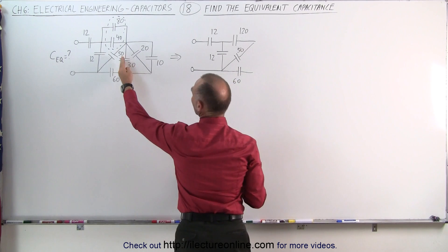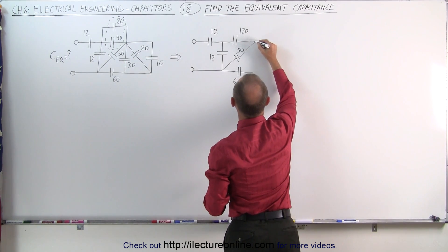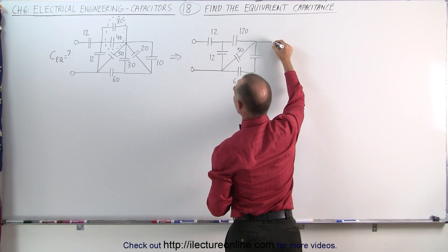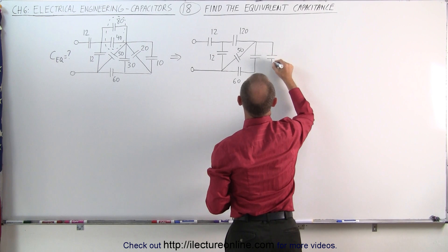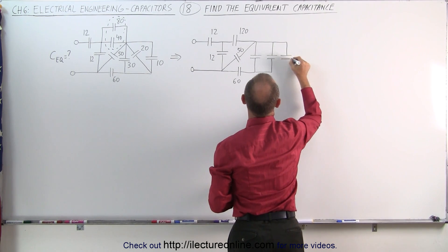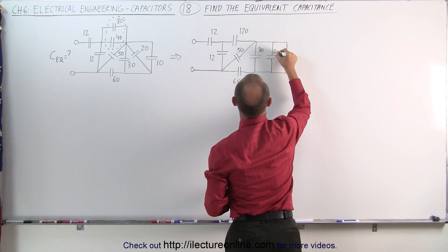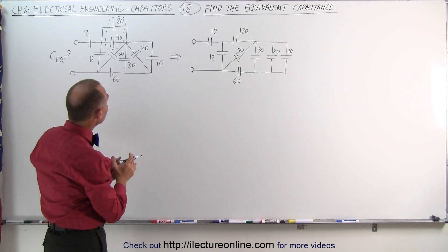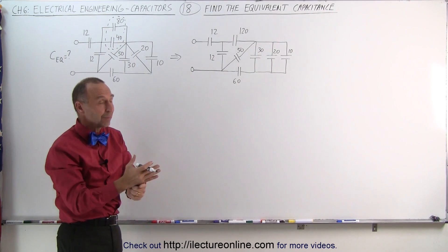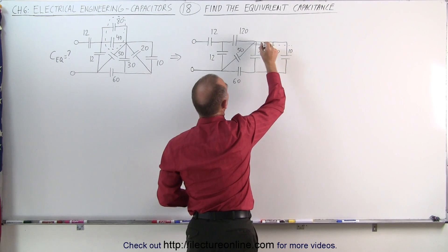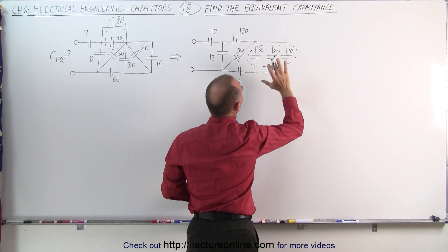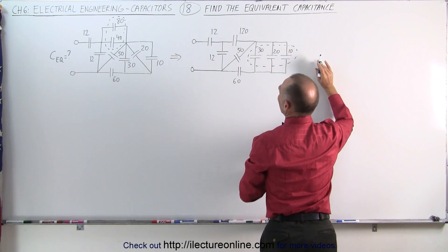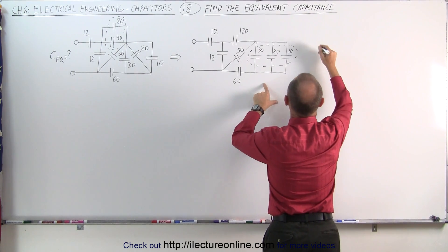Now I'm going to draw these three in a way where it looks like they're all in parallel to one another. We have our first one, which is a 30 microfarad capacitor, the second one drawn like this, and the third one like this — so 30, 20, and 10. Those last three capacitors are all in parallel, which means we can simply add them together and they become a single 60 microfarad capacitor.